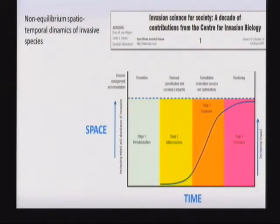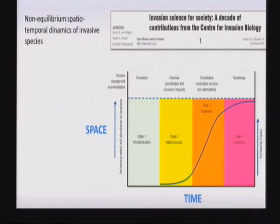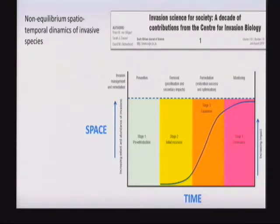It is particularly difficult because invasive populations are characterized by non-equilibrium spatiotemporal dynamics, so space and time are strictly connected. There is a stage one where we can have prevention — avoiding an alien population from establishing. Then there is an initial incursion, also called the lag phase, where we can probably manage and even eradicate the population. But over time, the space to manage becomes larger and larger, entering an expansion phase, and eventually a dominance phase where the impact is huge and the effort required to remove the species becomes incredible.